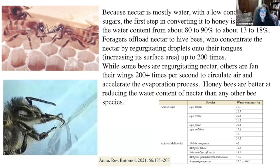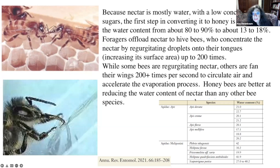Because nectar is mostly water with a low concentration of sugars, the first step in converting it to honey is to reduce water content from about 80–90 percent down to about 13–18 percent. Foragers bring nectar back to the hive and offload it to hive bees, who concentrate the nectar by regurgitating droplets onto their tongues — increasing surface area up to 200 times — sucking it up and spitting it out while other bees fan their wings 200 times per second to accelerate evaporation. Honeybees are better at reducing nectar water content than any other bee species.